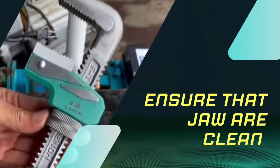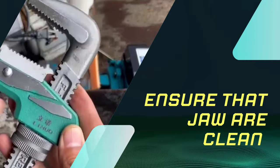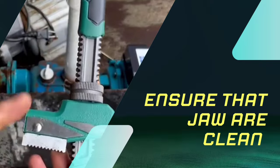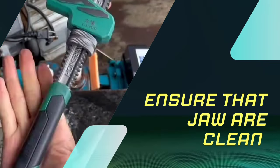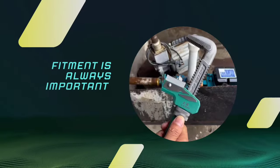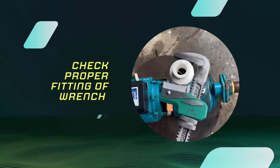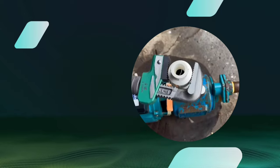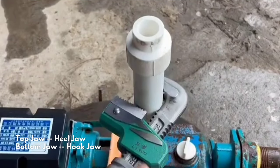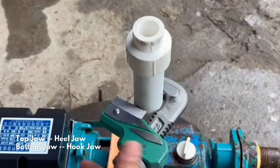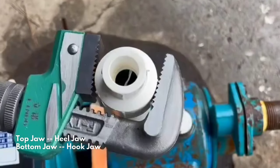First, always ensure that the jaws of the wrench are clean and free of debris. Dirt or grease can affect the grip which could lead to accidents. Next, adjust the jaws so that they fit snugly around the pipe. Make sure the top jaw, which is also known as heel jaw, is in full contact with the pipe. The bottom jaw, which is called hook jaw, should grip the pipe tightly when you are applying pressure.